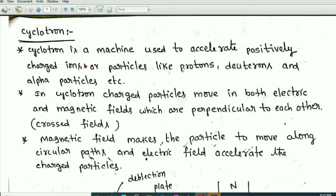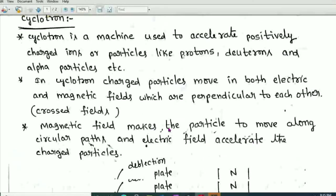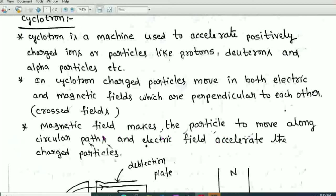The cyclotron was first invented by Lawrence and Livingston to study nuclear structure. In a cyclotron, the charged particle moves in both electric and magnetic fields, which are perpendicular to each other — these are called crossed fields. The magnetic field makes the particle move along a circular path, while the electric field accelerates the charged particle.